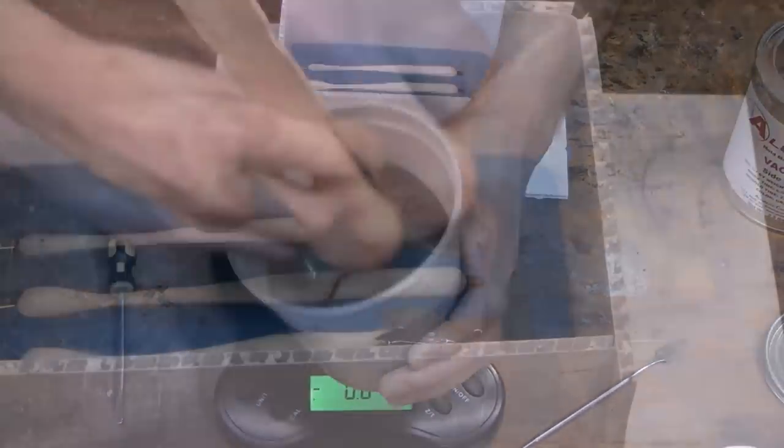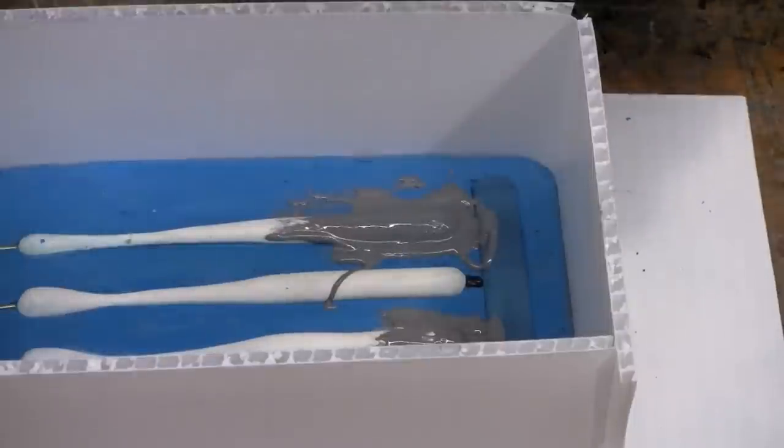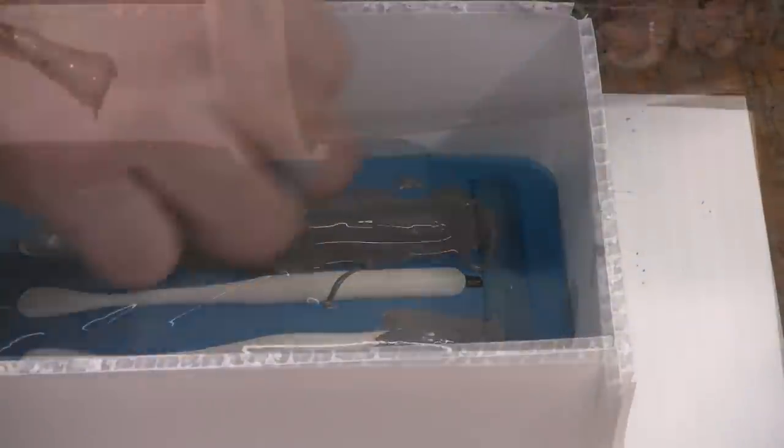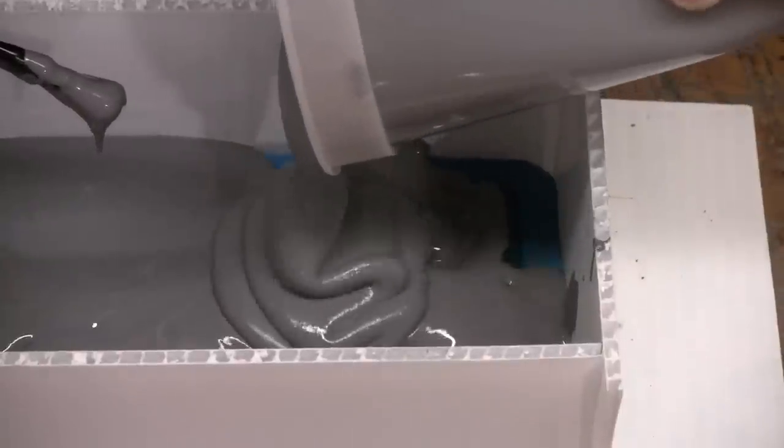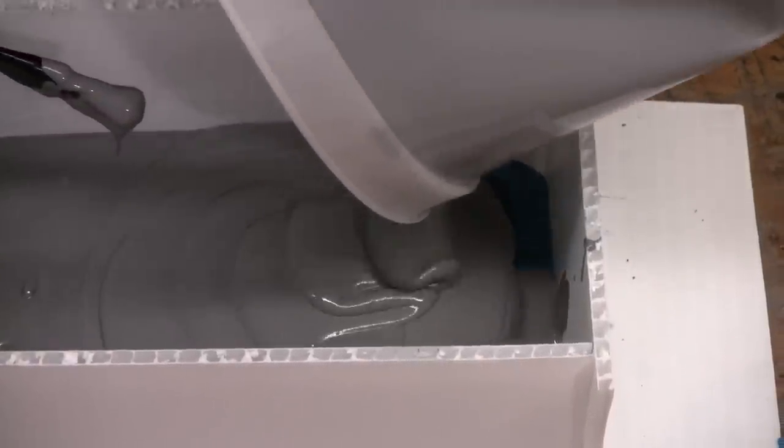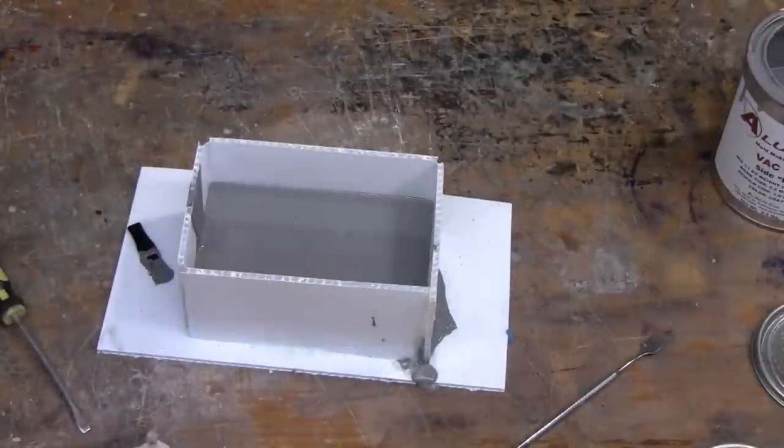Before pouring, we'd recommend taking a disposable paint brush and brushing on the first layer over the parts to make sure we don't trap any air bubbles against our lures. Once we've coated them, now we're ready to just come back and pour the remaining VAC50 over the originals.